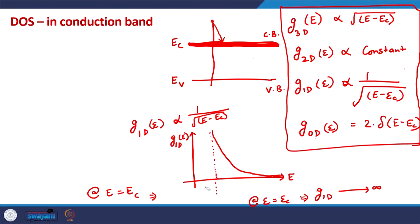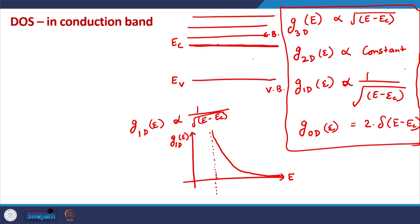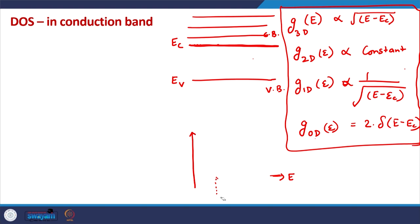In the 0D case, it is just a delta function — discrete energy levels. The notion of conduction band and valence band is not very well applicable in 0D materials. There will simply be allowed discrete electronic states where each state can accommodate 2 electrons. With this we essentially conclude our discussion on the density of states.